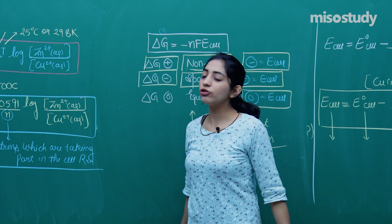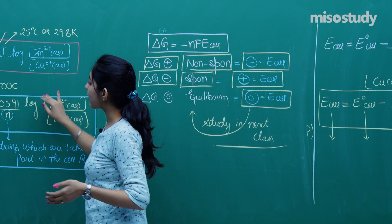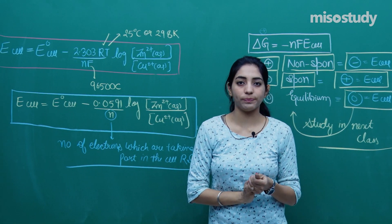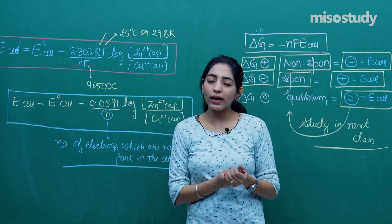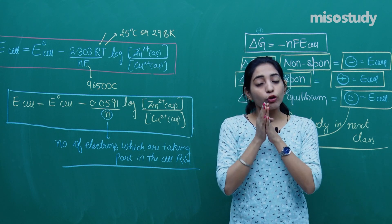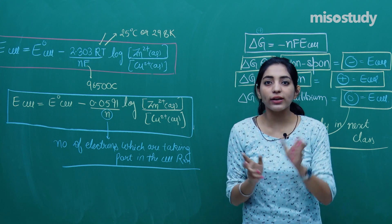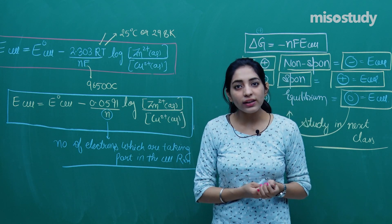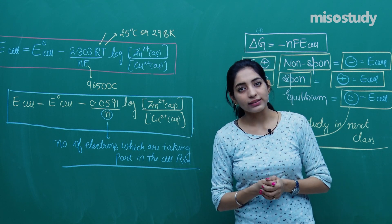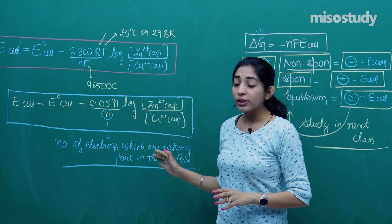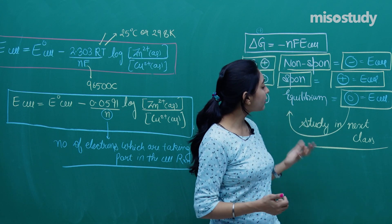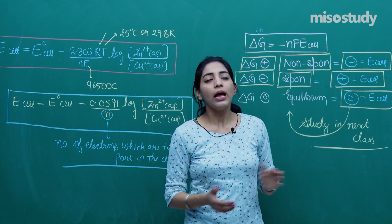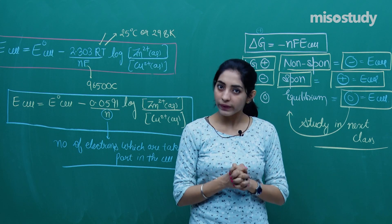That was all about the Nernst equation — these two final equations are the Nernst equation. If you do not remember thermodynamics, go back and watch the recordings of the thermodynamics chapter where Gibbs free energy was covered, then come back to this derivation. Be very comfortable with this derivation as it is the foundation for upcoming classes. In the next class I will cover more on this topic. Till then, take care — bye-bye, thank you.